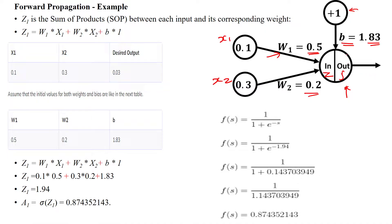Then we will apply the summation function. The summation function is: G1 = W1·X1 + W2·X2 + bias. The actual output is already given in the dataset. Now we will substitute the values into this equation.